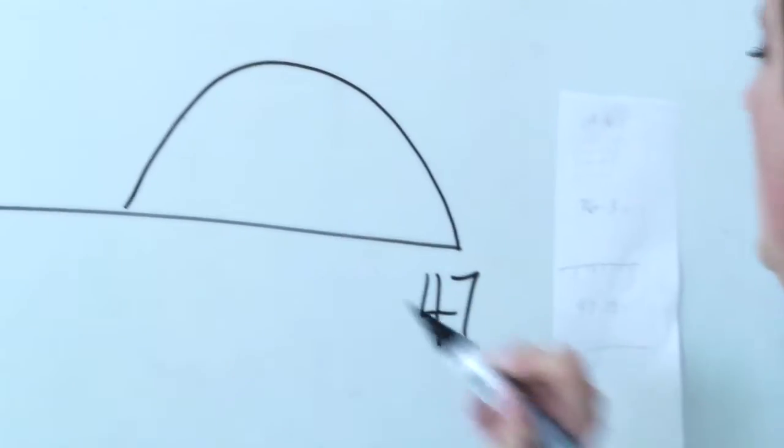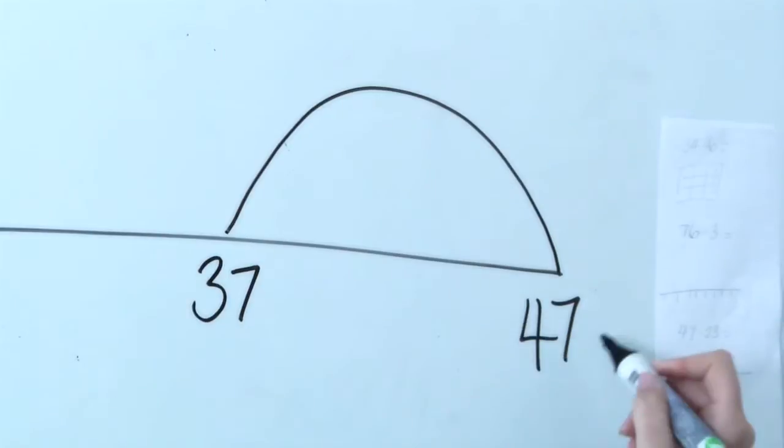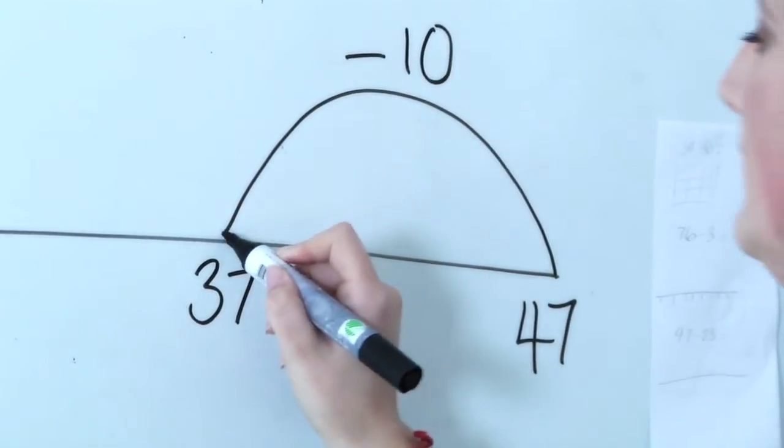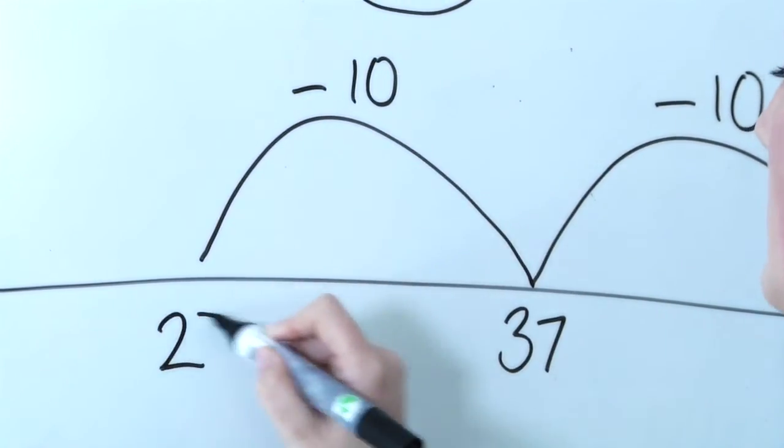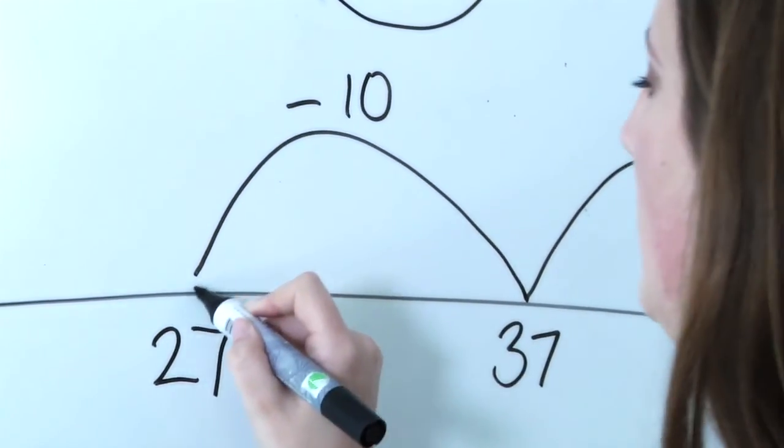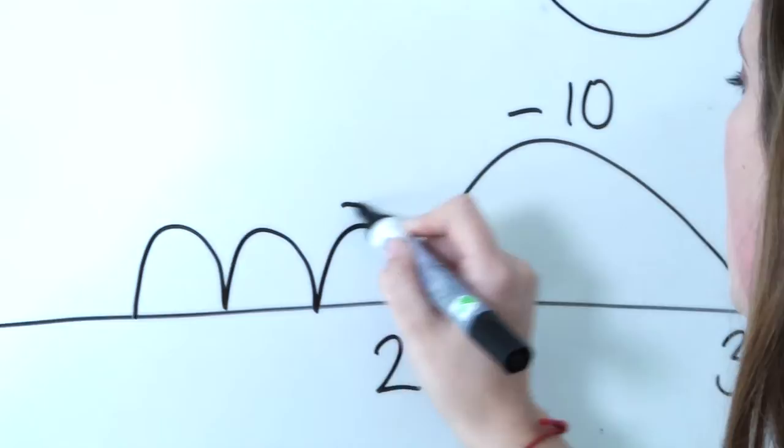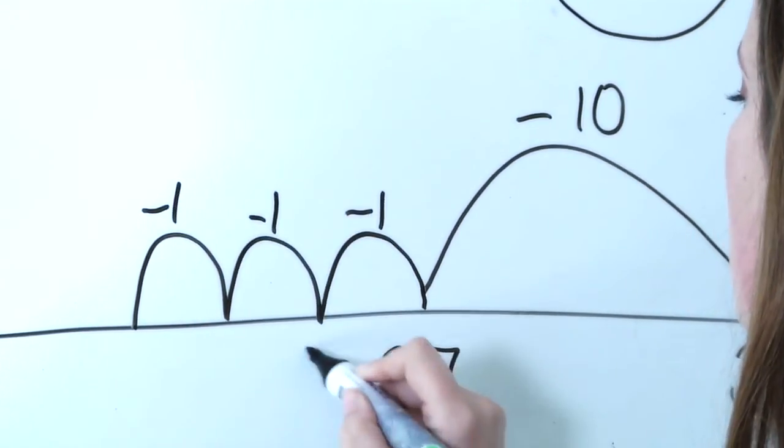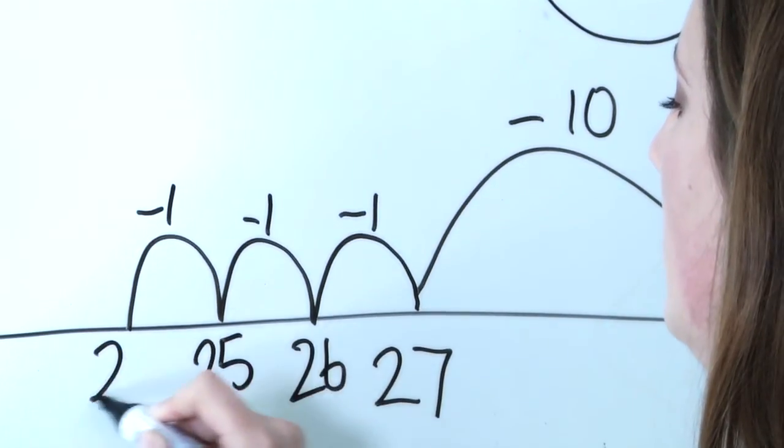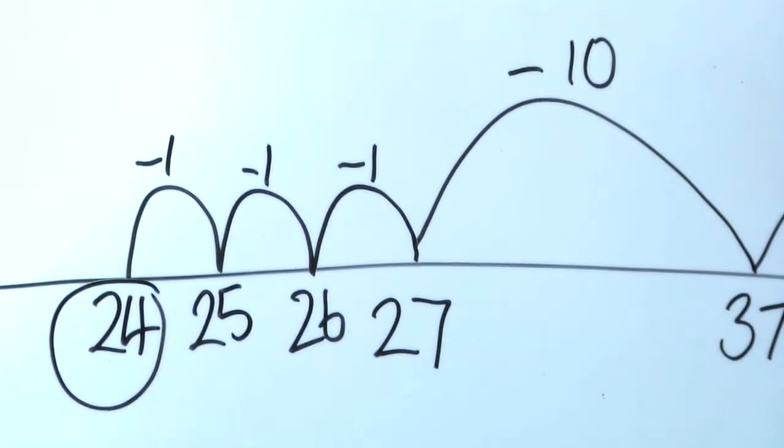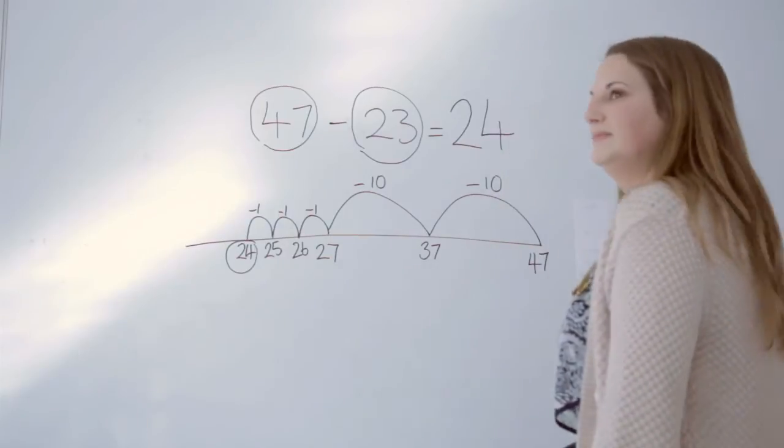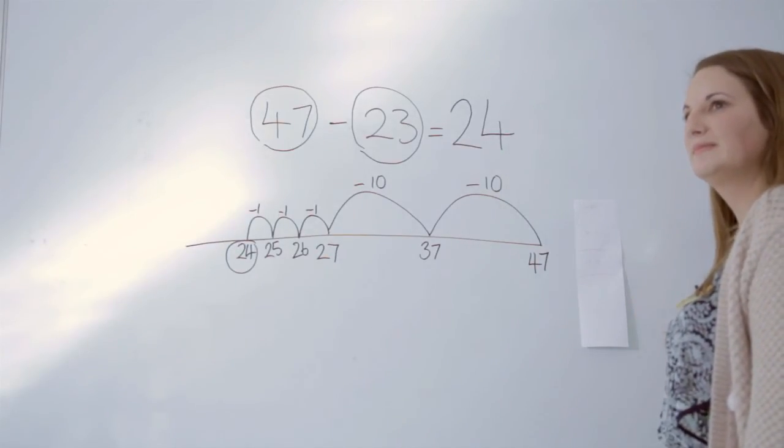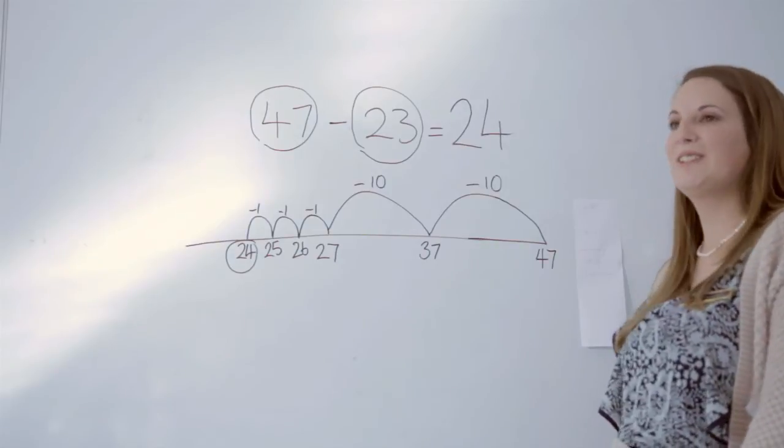So I know that I can take 10 away from 47 and that's 37. I can take 10 more to make 20. So that's 27 and then I need to take away my three units and then the answer is 24. And that's an introduction to subtraction at key stage one. Thank you.